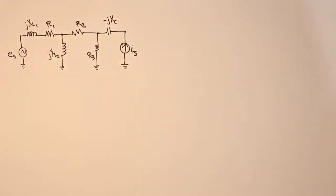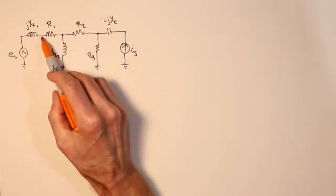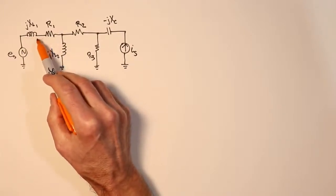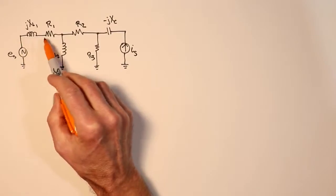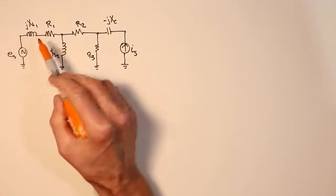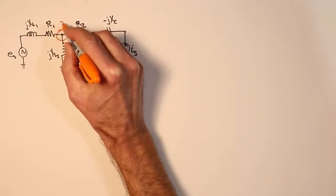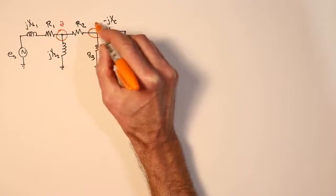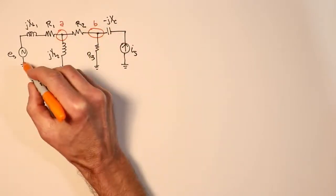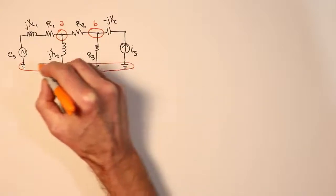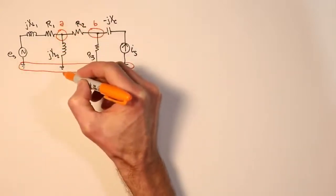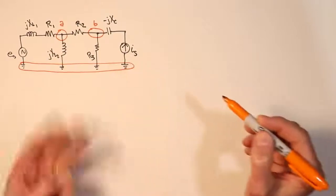Now the first thing we have to do is identify the nodes in this circuit. The nodes are basically connection points where currents can split or combine. This point right here, this point right here, although the components connect there, those are not what we would call nodes as far as nodal analysis is concerned. I want to see a place where the currents could possibly split. So we have one right here, which we'll call node A. We have one right here, node B. And then, of course, we have a reference node.